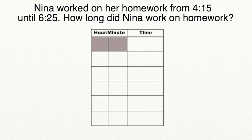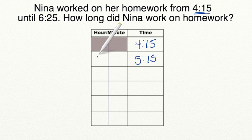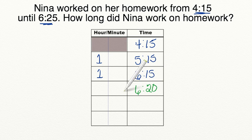Let's try another word problem using a T-chart. Nina worked on her homework from 4:15 until 6:25. How long did Nina work? We enter our start time 4:15, then use whole hours: 4:15 to 5:15 is 1 hour, and 5:15 to 6:15 is 1 more whole hour. From 6:15 to 7:15 would pass our end time, so we move into five-minute intervals: 6:15 to 6:20 is 5 minutes, and 6:20 to 6:25 is another 5 minutes — we've reached our end time.